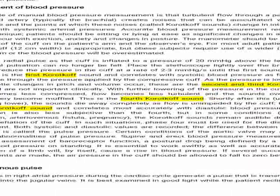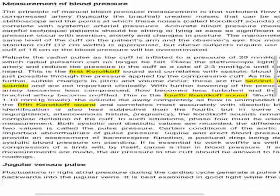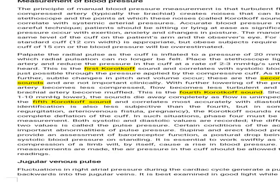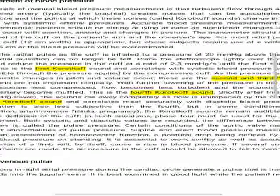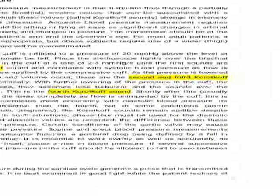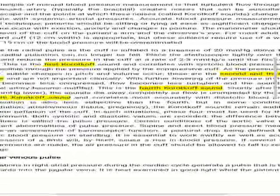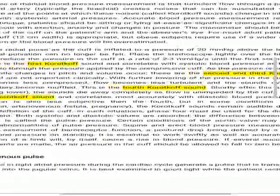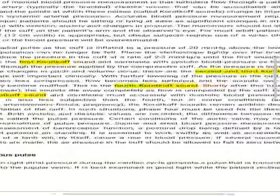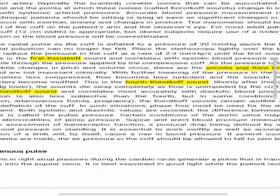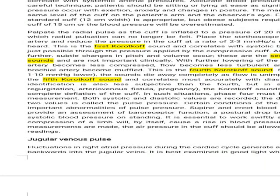The second and third Korotkoff sounds are not important clinically. With further lowering of pressure in the cuff, the artery becomes less compressed, flow becomes less turbulent, and the sound over the brachial artery becomes muffled — this is the fourth Korotkoff sound. Shortly after this, usually 1 to 10 mmHg lower, the sound dies away completely as flow is unimpeded by the cuff — this is the fifth Korotkoff sound and correlates most accurately with diastolic blood pressure. Its identification is also less subjective than the fourth. However, in some conditions such as aortic regurgitation, arteriovenous fistula, and pregnancy, the Korotkoff sound remains audible despite complete deflation of the cuff. In such situations, phase 4 must be used for the diastolic measurement.